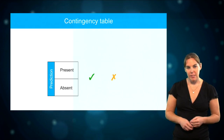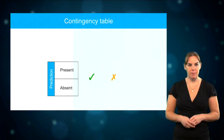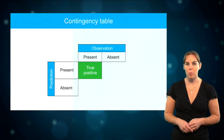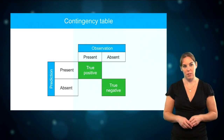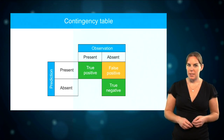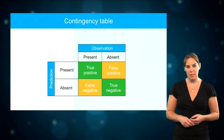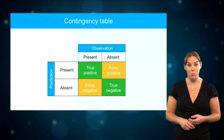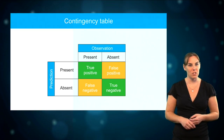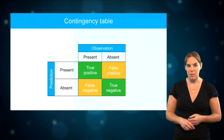The categorical predictions of a species distribution model — whether a species is present or absent in a particular site — can either be correct or incorrect. The predictions are compared to the actual observations, and a correct prediction is referred to as a true positive for presences and a true negative for absences. The two different types of errors are a false positive, when the model predicts the species to be present where it has not been observed, or a false negative, when the model predicts the species to be absent in places where it was observed to be present. A table summarising the performance of a model like this is called a contingency table.